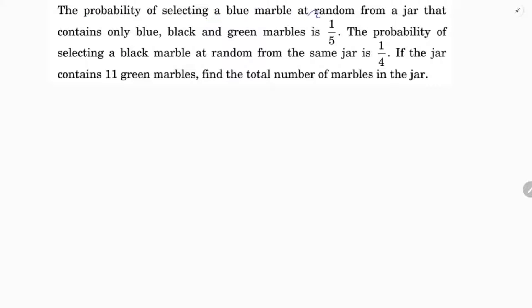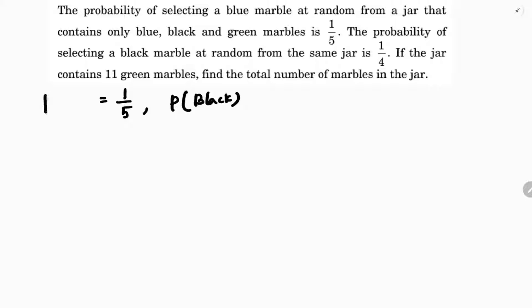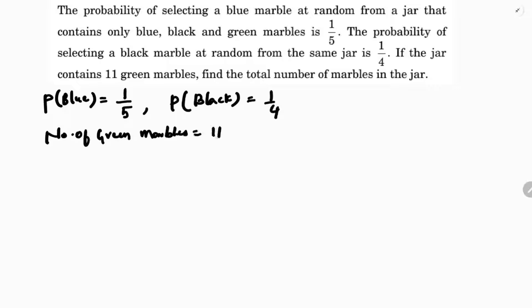The probability of selecting a blue marble at random from a jar that contains only blue, black, and green marbles is 1/5. So probability of blue marbles is 1/5. The probability of selecting a black marble at random is 1/4. If the jar contains 11 green marbles, find the total number of marbles in the jar.